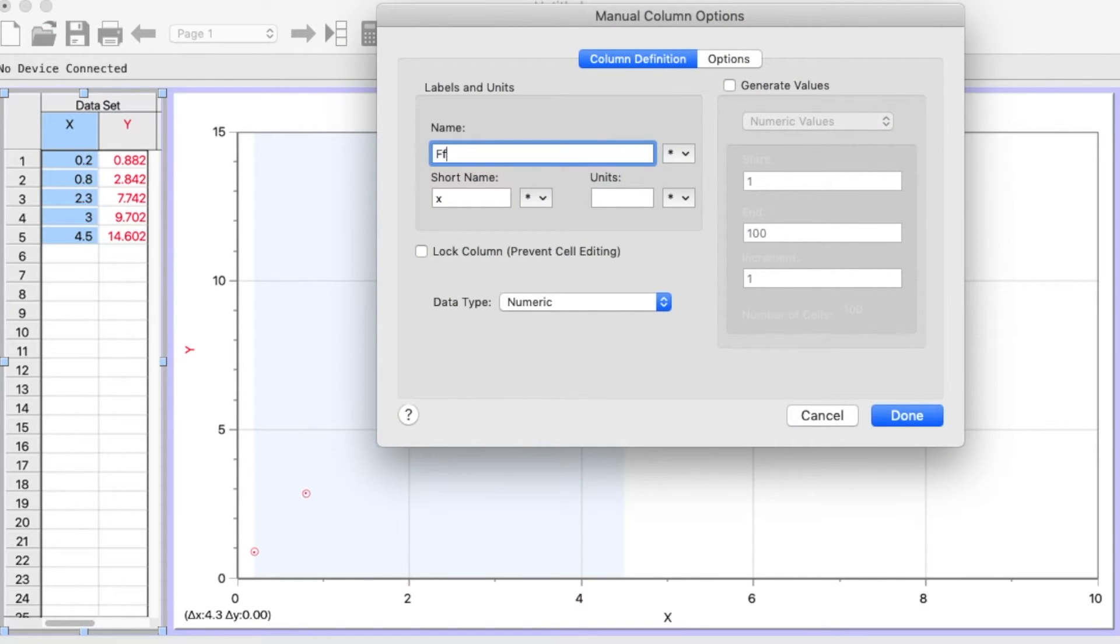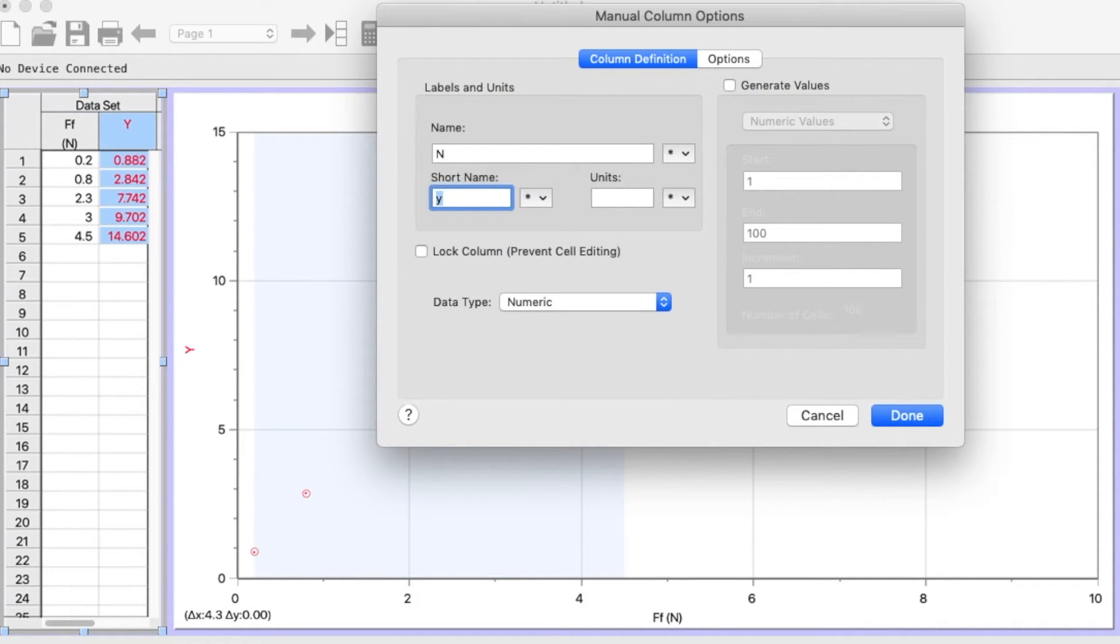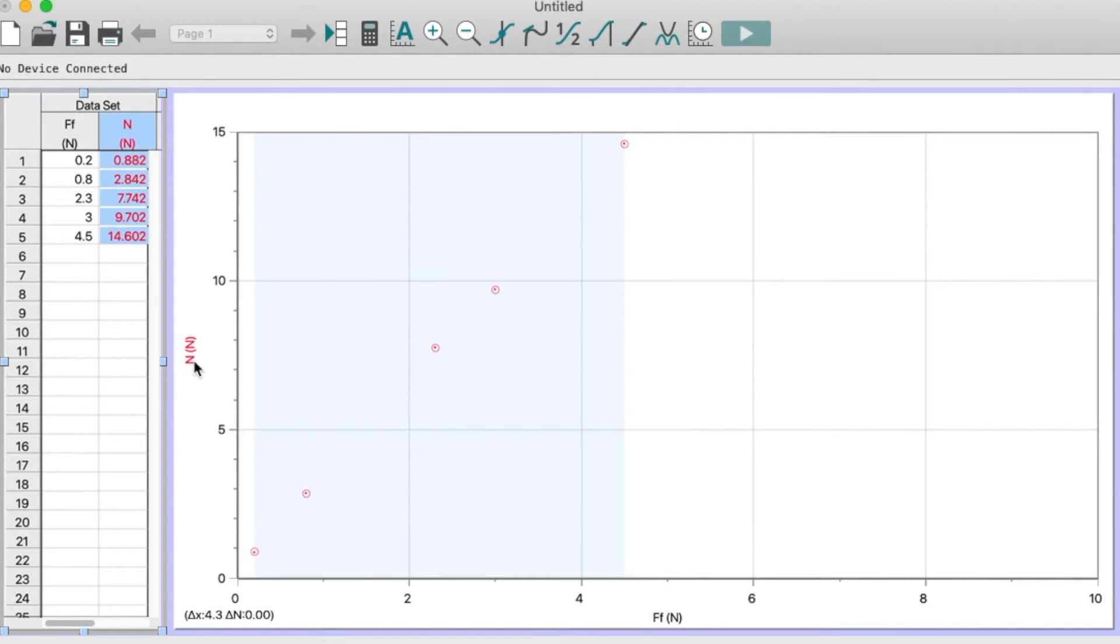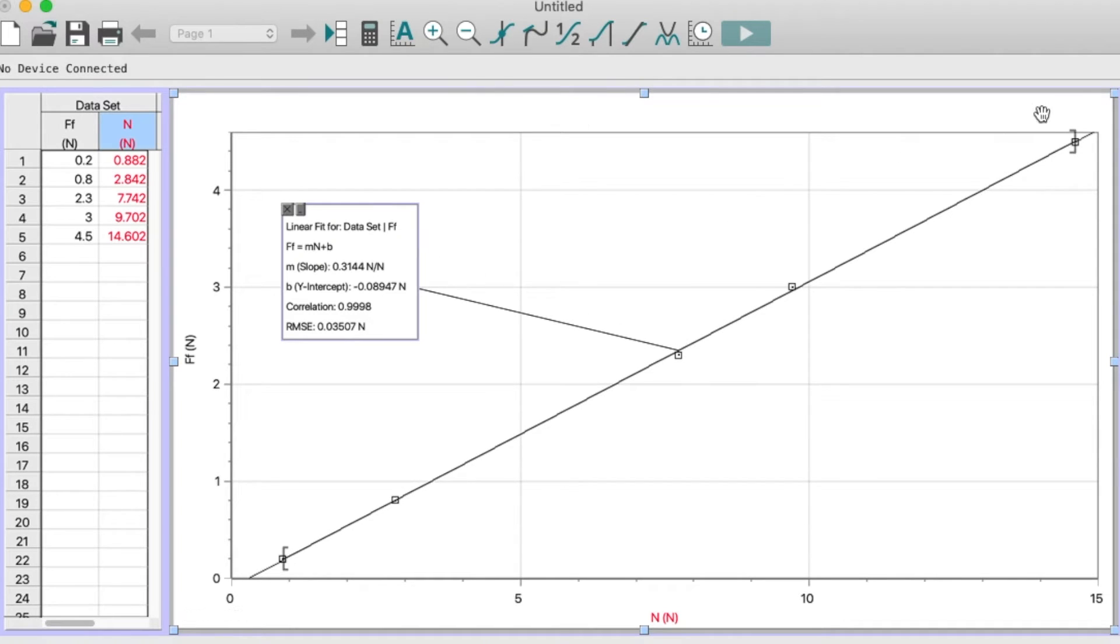So this is the frictional force, and this is called FF, and units of Newtons. And then this is the normal force, N, N, N. I know that's silly, but that's fine. And then remember I want the frictional force on the vertical axis. So I'm going to switch this to frictional force. I'm going to switch this to normal force, and then I'm going to zoom in. And now to fit a graph in, to fit a linear line to this. It looks linear, that's good. There's a linear function fitting right here. Boom, right there, and there you go.